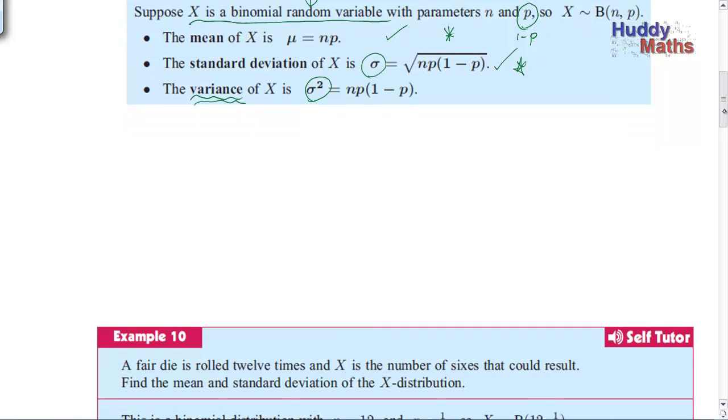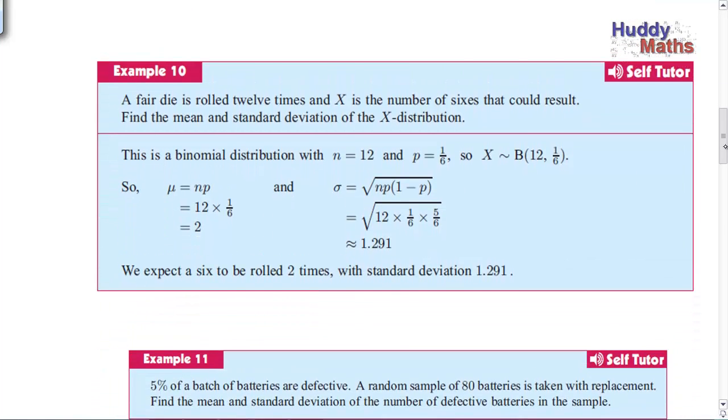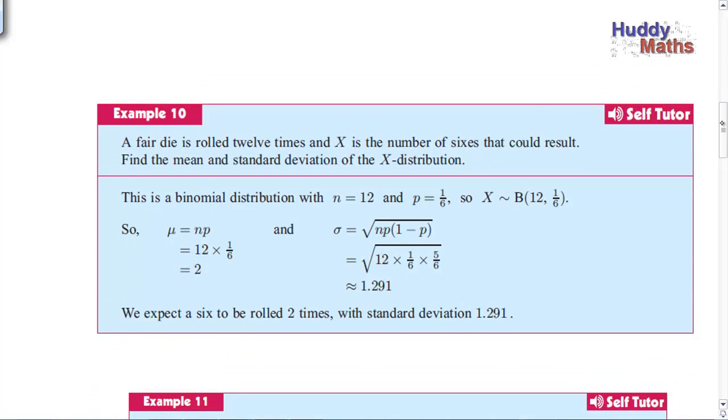Come on down now and have a look at some of these. So a fair die is rolled 12 times, and X is the number of sixes that could result. Find the mean and standard deviation of the X distribution. So first of all, you really should say, is it binomial? Can you say X is distributed as a binomial with 12 trials and the probability of a success being a six? Well, yes, you can, because here there are only two outcomes, a six or not a six. Actually, six possible outcomes when you roll the die, but you are looking for a six or not a six, so you can make it bi.